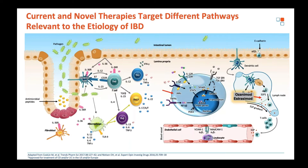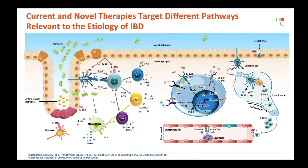Ozanimod and etrasimod are the sphingosine-1-phosphate modulators, impacting the process by which effector memory lymphocytes egress from the draining mesenteric lymph nodes. Finally, we have the JAK inhibitors, which impact JAK-STAT signaling. We're going to be discussing drugs from every one of these classes over the course of the next 60-odd minutes.